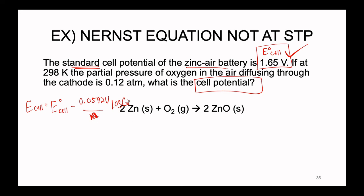To find N, we observe oxidation numbers in the balanced equation. Both reactants are free elements with zero oxidation number. The product ZnO is an ionic compound where zinc has a 2+ charge and oxygen has a 2− charge. The zinc went from 0 to +2, meaning it lost two electrons; oxygen went from 0 to −2, gaining two electrons. Therefore, two electrons are transferred from zinc to oxygen, and our N value equals 2 moles of electrons.